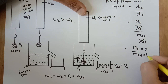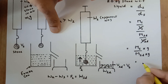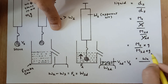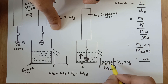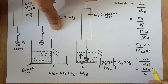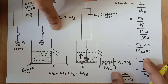If I multiply numerator and denominator by g, this becomes weight of the stone in air, Wa, upon weight of the liquid displaced. As per Archimedes principle, weight of liquid displaced equals upthrust, so this simplifies to weight in air upon upthrust. It can be further simplified as weight in air upon (weight in air minus weight in liquid), which is the final conclusion.